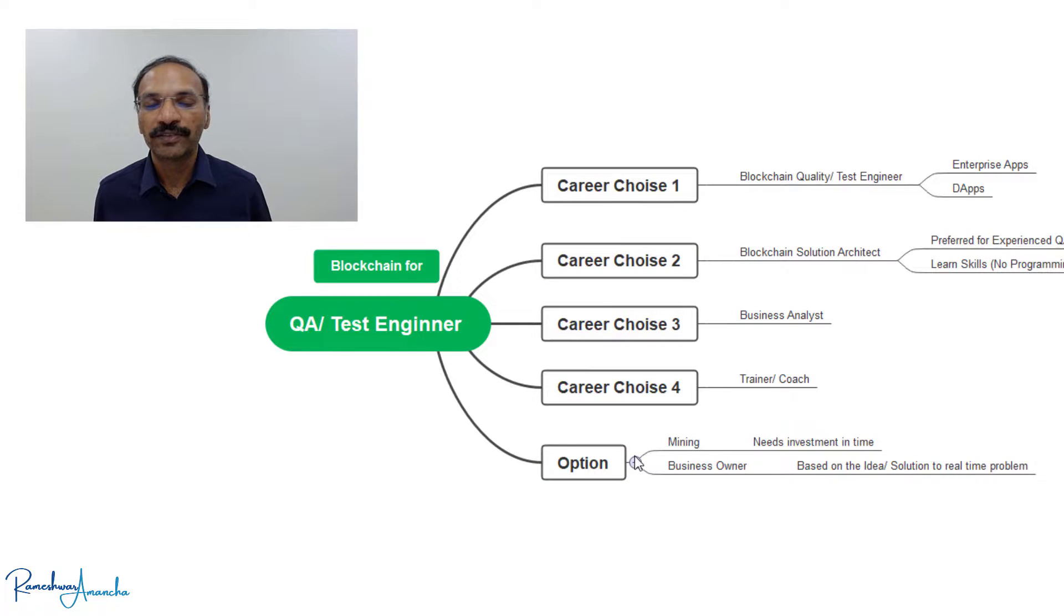And there are a couple more options. Not preferred but I just keep throwing them out to you so that you are aware. You can start mining. Now once you understand blockchain, how the blockchain works, and if you have some resources, if you have some investment, you can put up a node and start investing into the node which could return the money through mining. Of course that requires a lot of time and effort.